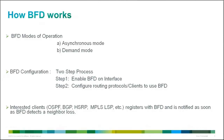BFD does not have a discovery mechanism — sessions must be explicitly configured between endpoints. You must configure BFD on both routers. BFD can operate in one of two modes: asynchronous mode and demand mode. Cisco supports asynchronous mode, where routers periodically send BFD control packets to activate and maintain BFD neighborship sessions. Configuring BFD is a simple two-step process: first, configure BFD timers on the interfaces; second, configure the routing protocol to use BFD. Once established, BFD control packets act like IGP hello packets to detect liveliness, but at a much faster rate.